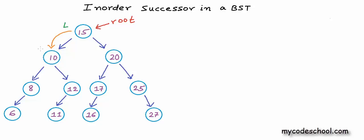For this node, once again we have something in left, so we make another recursive call to go to its left child. Now we are at node with value 8 and we go left one more time. Now for this node with value 6, which is a leaf node, we have nothing in left. So we can say that its left subtree is done and we can visit this node. Visiting for me means reading the data in that node. And since there is nothing in right either, we are completely done with this node.